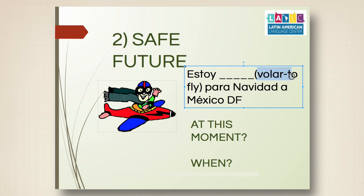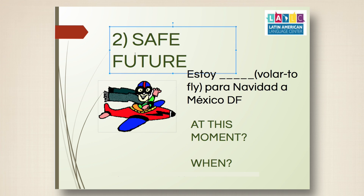Now let's look at the second use. Can you change 'volar' to the -ando form? Very good — 'volando' is correct. Estoy volando a México para Navidad means 'I am flying to Mexico for Christmas.' Even though it seems like it's happening right now, it's actually referring to a future event.